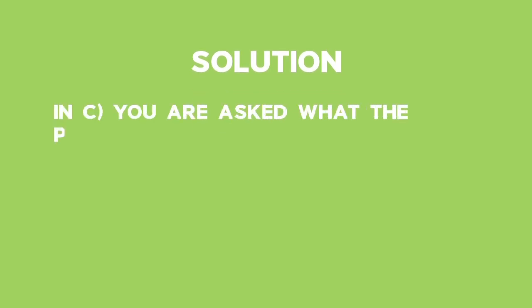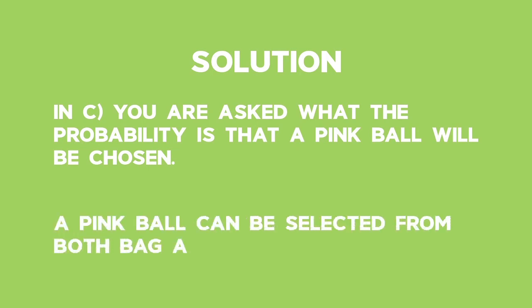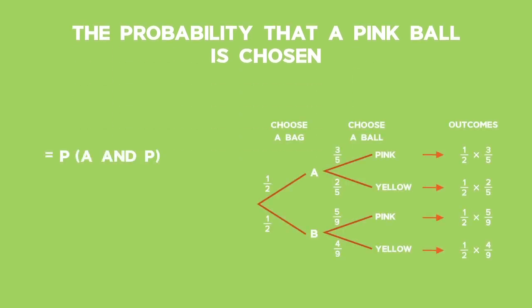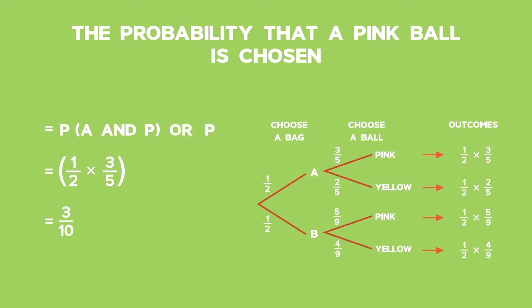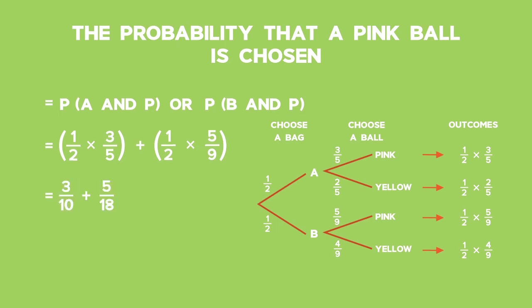For Part C, we are asked what the probability is that a pink ball will be chosen. A pink ball can be selected from both Bag A and Bag B. Using the product rule, the probability that a pink ball is chosen from Bag A — that is, the probability of choosing A and P — is 1 half times 3 fifths, which equals 3 over 10. The probability that a pink ball is chosen from Bag B — that is, the probability of choosing B and P — is 1 half times 5 over 9, which equals 5 over 18. Because the two events are mutually exclusive, we can use the addition rule to add the two probabilities, giving a final probability of 26 over 45, or approximately 57.8%.